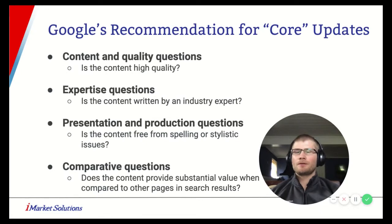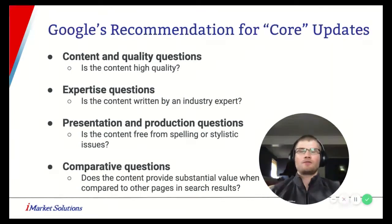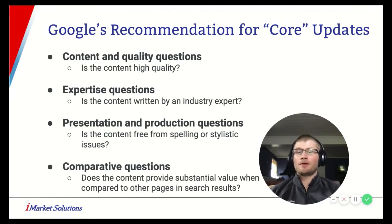These are some of the main components or buckets of what they're looking at as they do core updates. The first is content and quality questions — they're trying to figure out if the content is high quality, if it's unique, and if it's offering user value. They want to reward websites that are providing high quality, unique, relevant content.